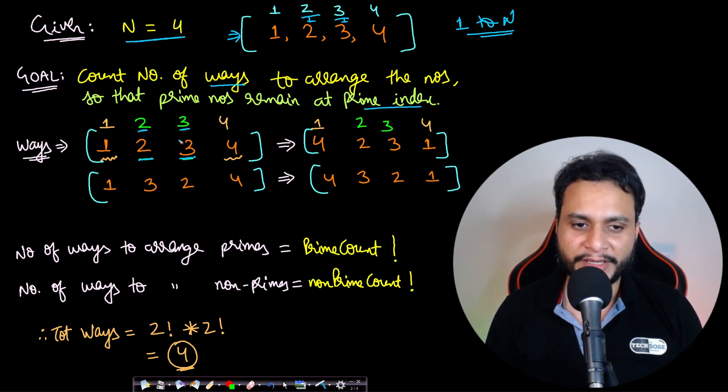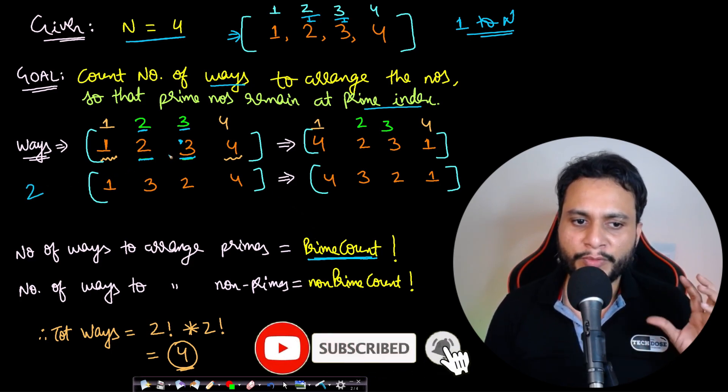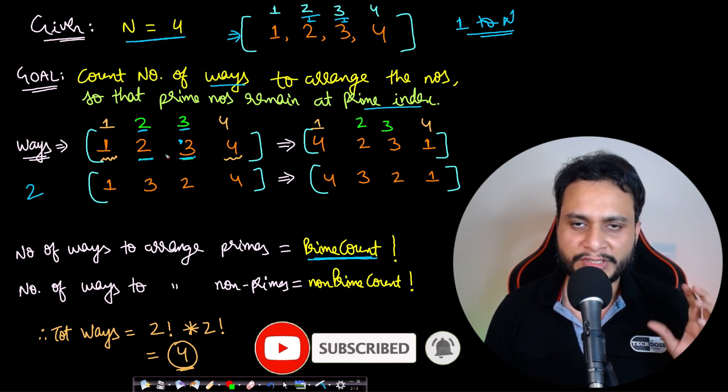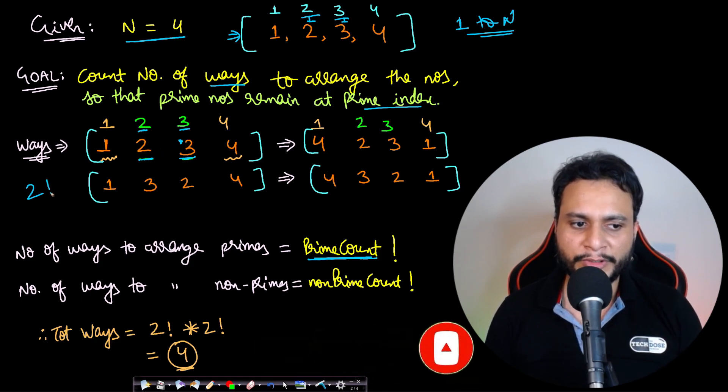To find other possible arrangements, you can move one prime number to only a prime index. Let's say there are prime_count number of prime numbers. In this case there are two prime numbers. If you want to find all possible arrangements of two prime numbers in two slots, it will be 2 factorial.